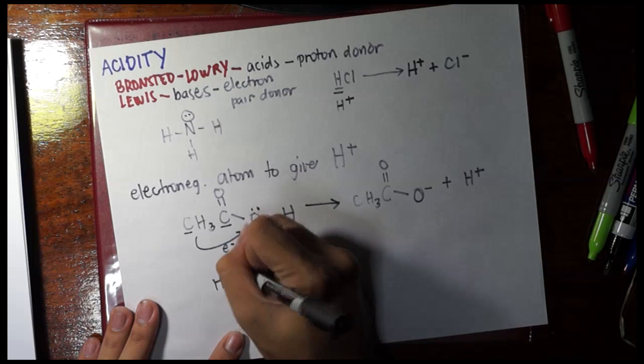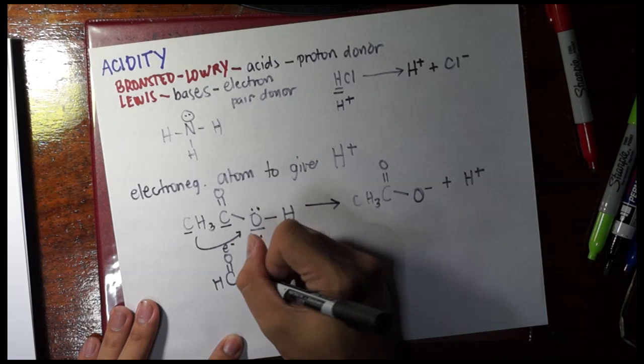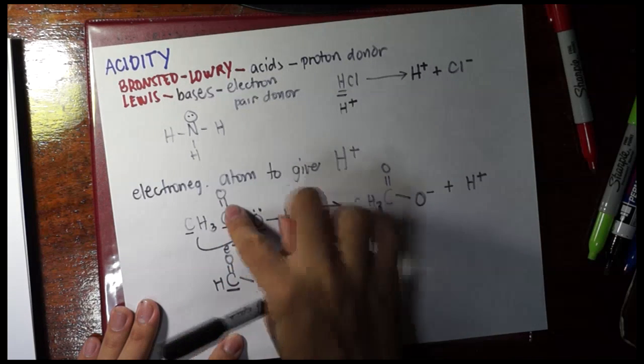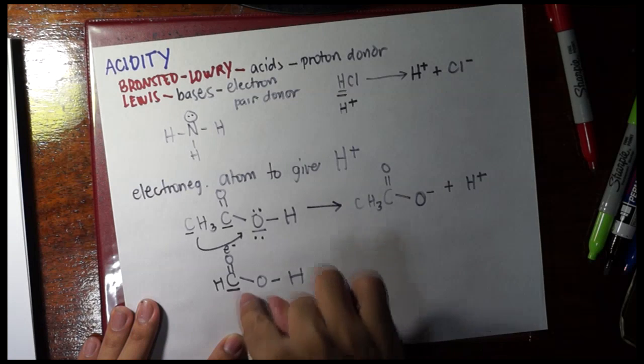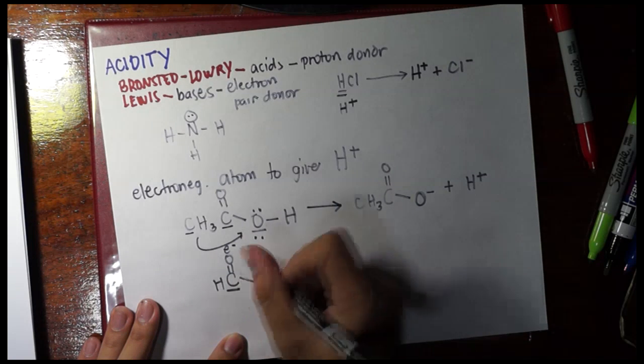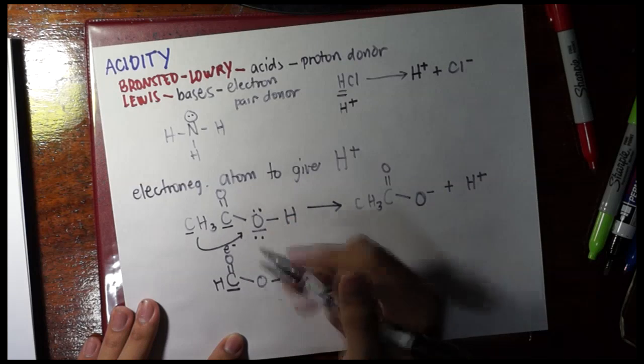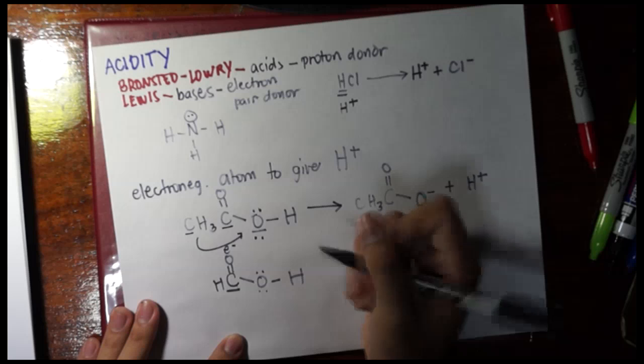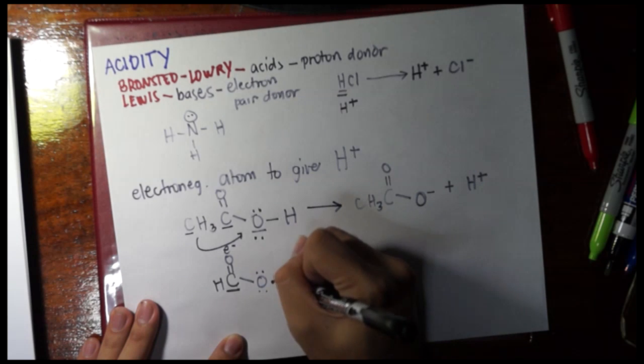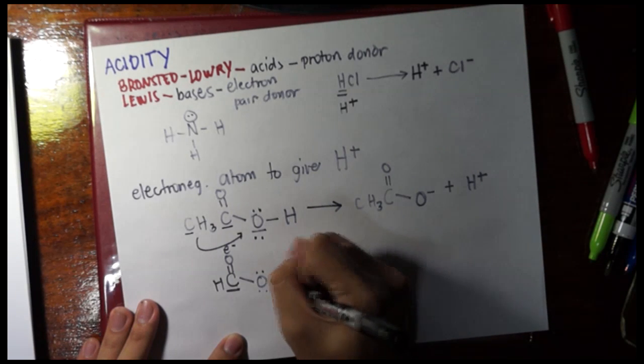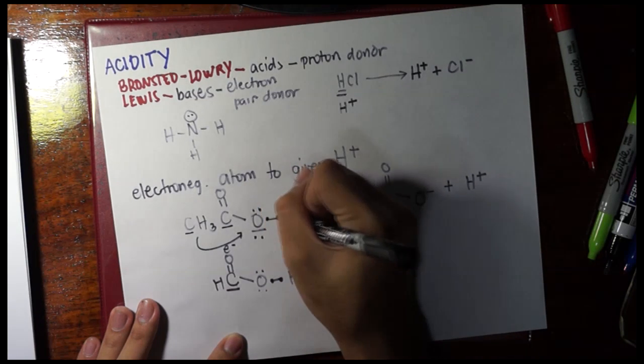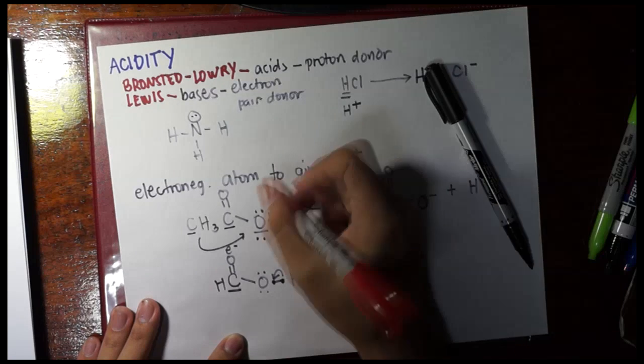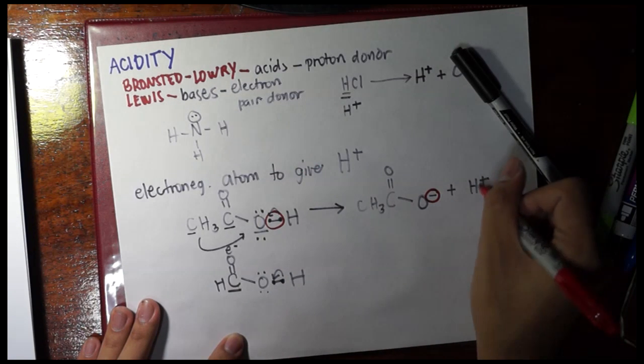But for example, we have here methanoic acid or formic acid. We only have one carbon. Compared to acetic acid, it has a weaker electron repelling inductive effect, simply because it only has one carbon. So what does it mean? The oxygen here is less satisfied. So what does it do in order to be satisfied? It snatches away these two electrons. So if it snatches away these two electrons, that's what becomes the negative charge.